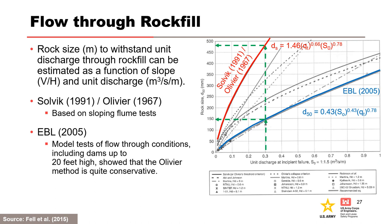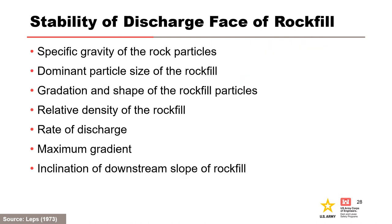In the example shown, for a given discharge of 0.3 cubic meters per second per meter, the mean rock size for stability is about three times as much for the Slovic-Olivier method than the EBL 2005 method. Stability of the discharge face of an unreinforced rock fill slope depends on these characteristics in order of increasing importance: specific gravity of the rock particles, dominant particle size, gradation and shape of the rock fill particles, relative density of the rock fill, rate of discharge, maximum gradient, and inclination of the downstream slope of rock fill.